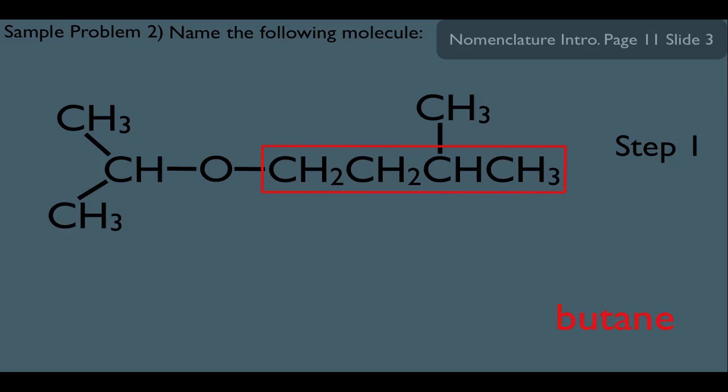Now step two, when it comes to numbering here, we would want to number from left to right in this case. That puts a substituent on carbon one and a substituent on carbon three.